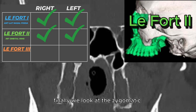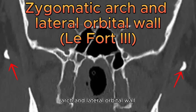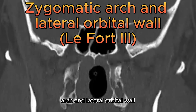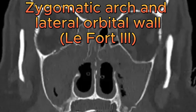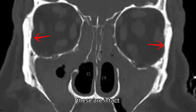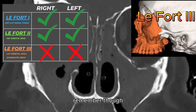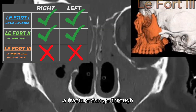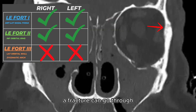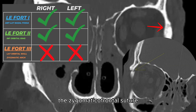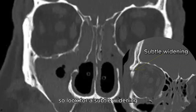Finally we look at the zygomatic arch and lateral orbital wall. These are intact. Remember though, a fracture can go through the zygomatic or frontal suture, so look for a subtle whitening.